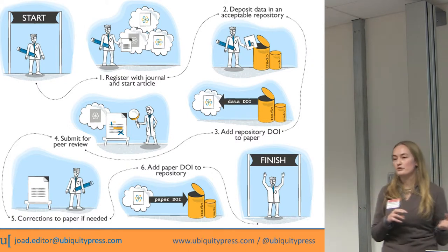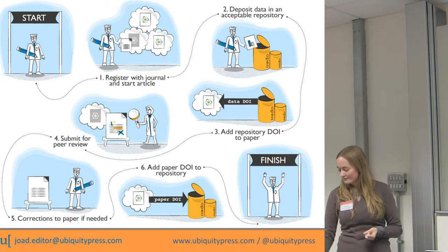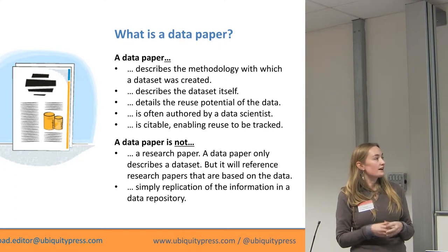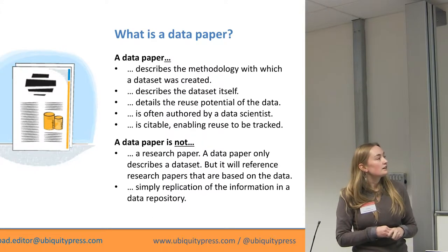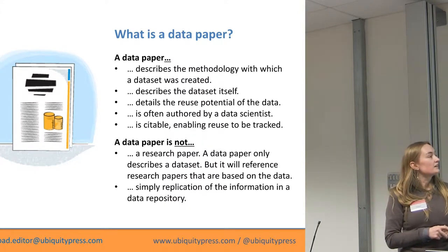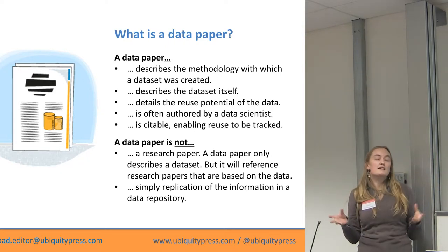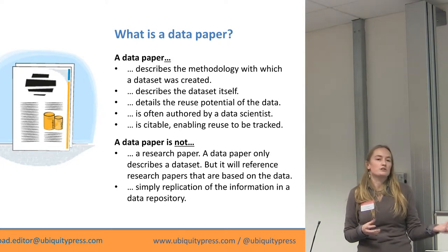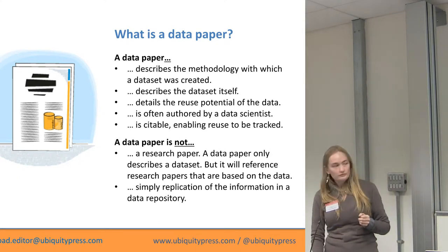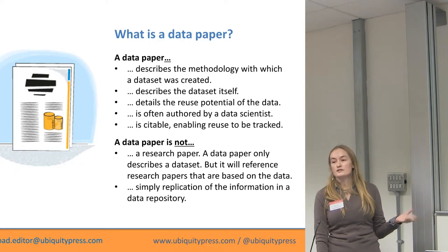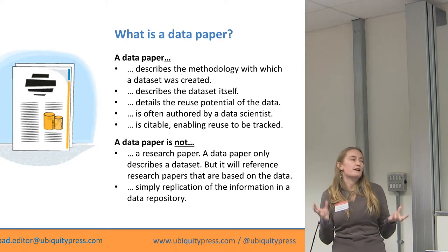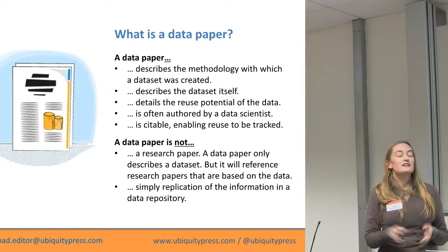You can actually cite the data in that repository — it has a particular number and is actually retrievable. So what's a data paper? It's a paper that basically describes how you put that data together, how the dataset was created, describes that data, and details what you could actually do with it. It's often authored by data scientists — it may not be the principal investigator, but the person in charge of collecting and collating the data. So it's a very good way for people to get a paper who might not normally become first author. And as I said, it's citable, so you can track who's using your data.